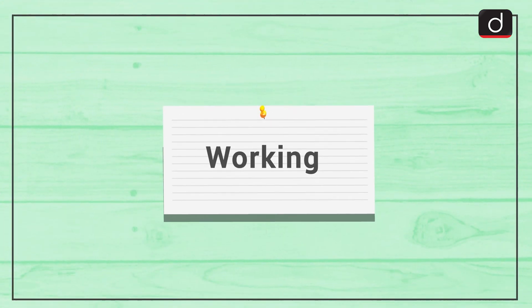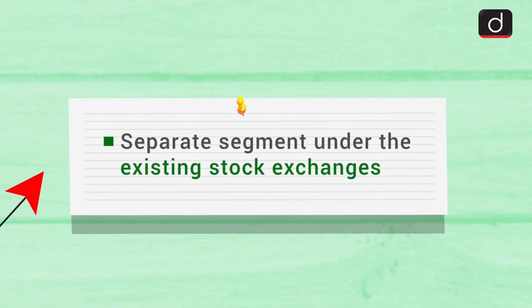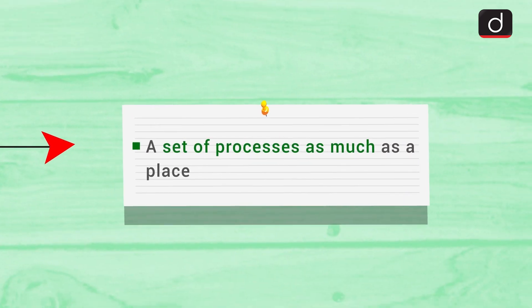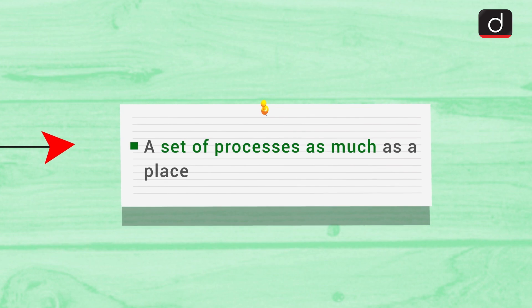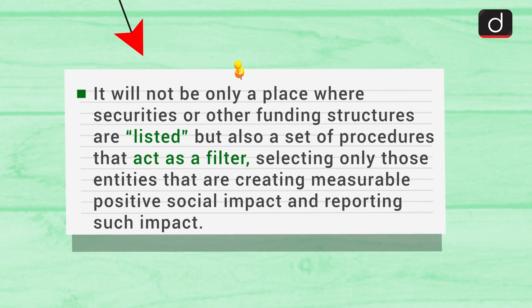Looking at the working of the exchange, the SSE is a separate segment under the existing stock exchanges. It is a set of processes as much as a place. This means the SSE will not only be a place where securities or funding structures are listed, but also a set of procedures that act as a filter, selecting only those entities that are creating measurable positive social impact and reporting such impact.